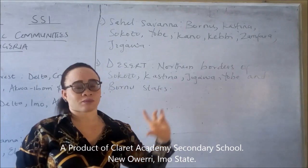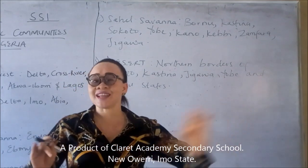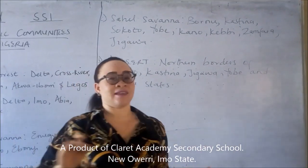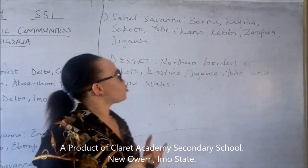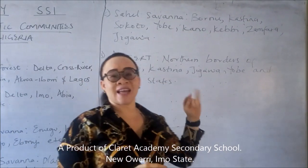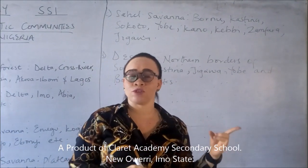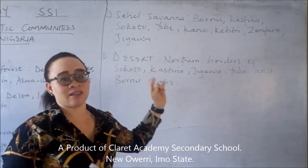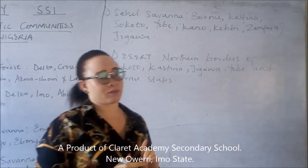They have trees that are scattered and deciduous. And also you have drought-resistant trees like Date Palm and Acacia in this region.